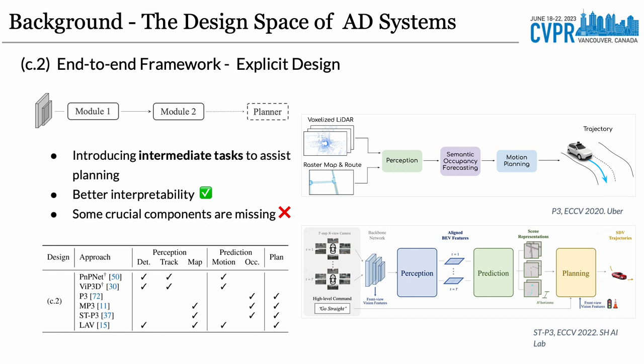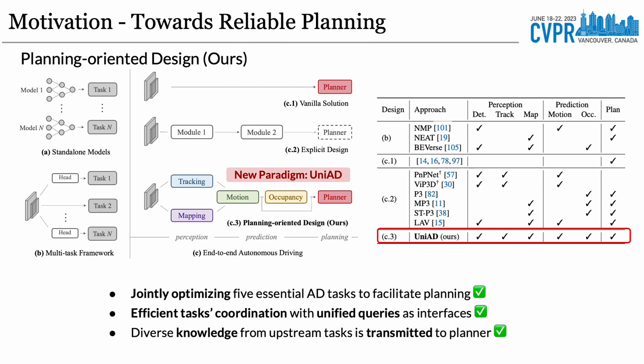Other work adopts an explicit design which introduces specific intermediate tasks to assist planning and improve interpretability. Nevertheless, some crucial components of a safe autonomous driving pipeline are still missing. Considering the defects of previous work, we were driven to create an end-to-end autonomous driving system with a focus on reliable planning.